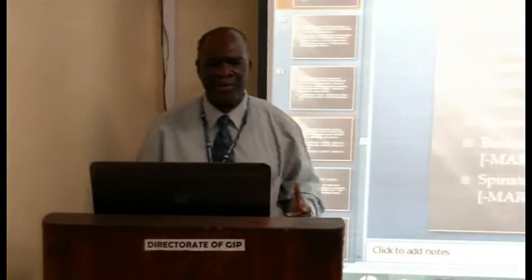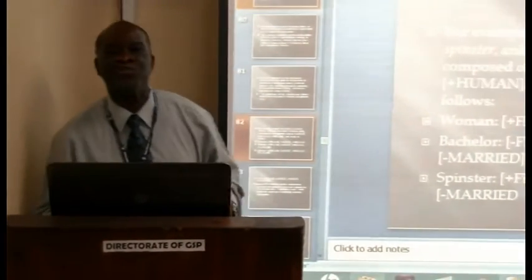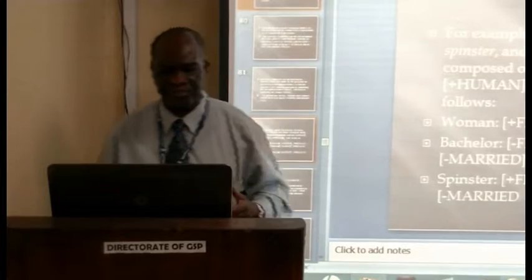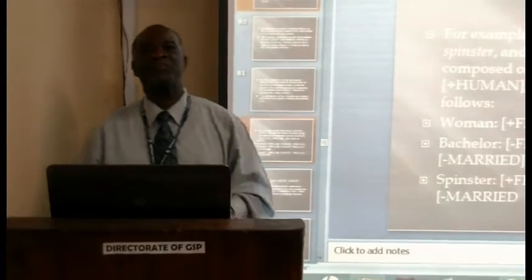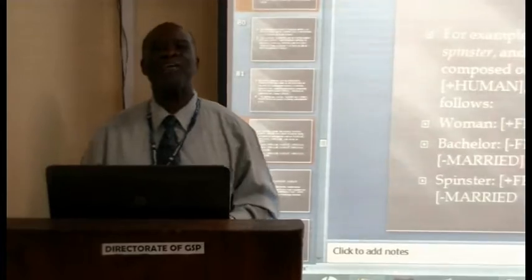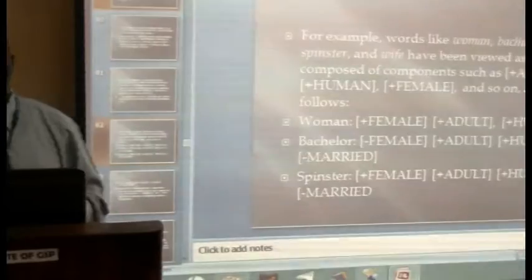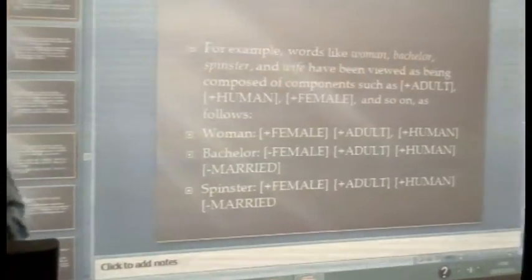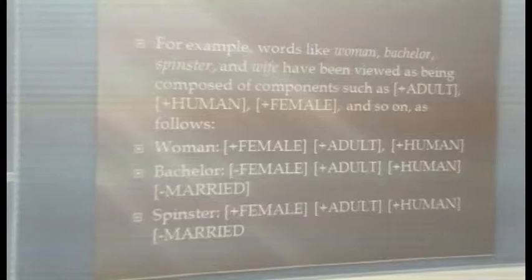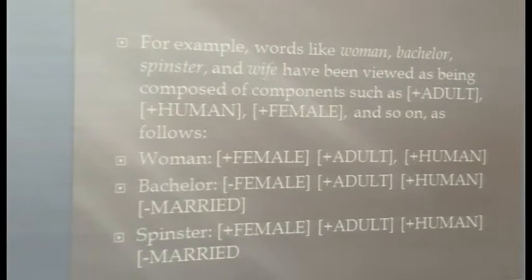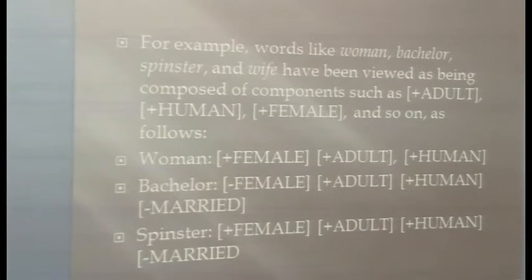What is the meaning of the noun woman in terms of componential analysis? The meaning of woman can be reduced to just three components: plus female, plus adult, and plus human. What about bachelor? Bachelor can be defined as minus female — because a bachelor is a man — plus adult, plus human, and plus minus married, which means that a bachelor is unmarried.